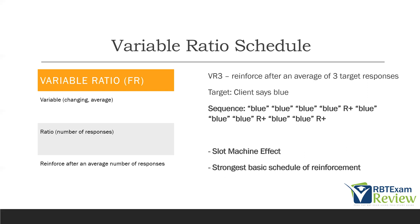Variable ratio: variable means changing or an average; ratio means number of responses. So you're reinforcing after an average number of responses. Once you understand the words, it rolls off the tongue — variable means average, ratio means responses, so reinforce after an average number of responses. VR3 means you're reinforcing after an average of three target responses. In a perfect world, if you delivered reinforcement ten times and took the average number of responses, it would come out to three. Remember, these are guidelines.